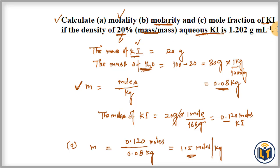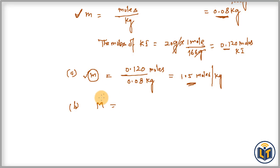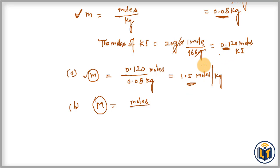Now let's move on to molarity. Molarity uses a capital M — that is the difference from molality (small m). The formula is: molarity equals moles of solute divided by the volume of solution in liters. We have already calculated the moles of solute, but we need to find the volume of solution in liters.